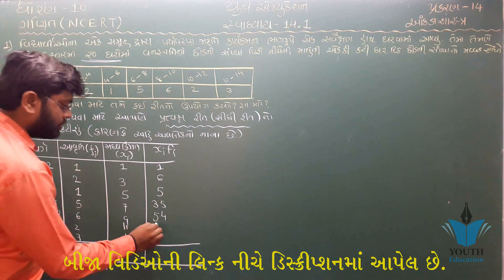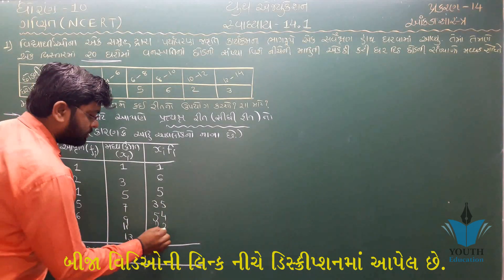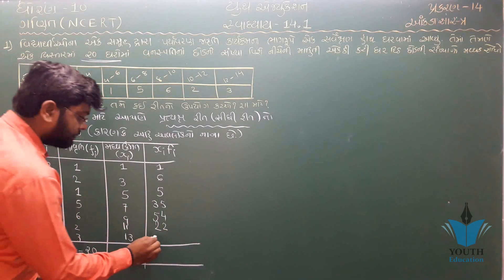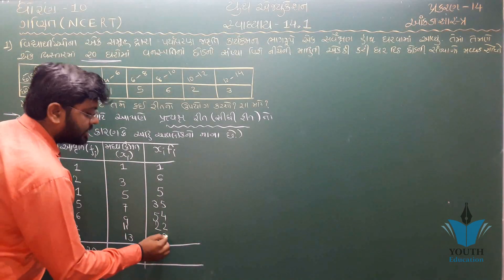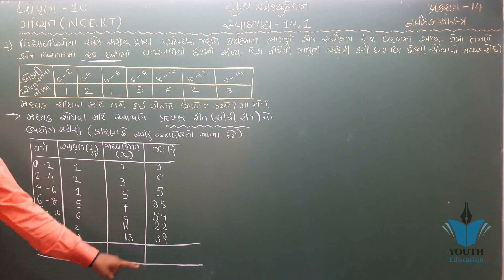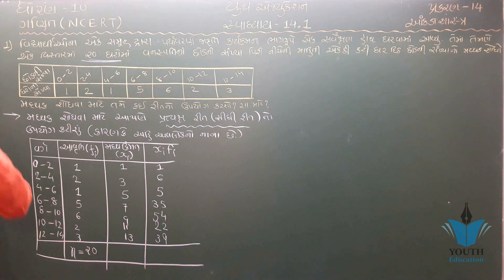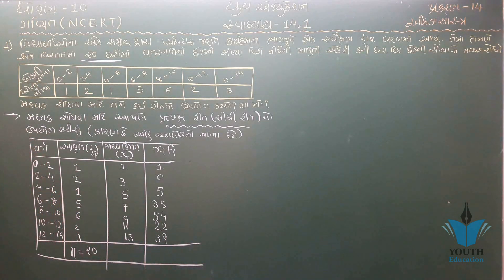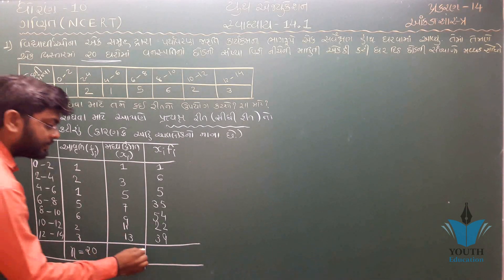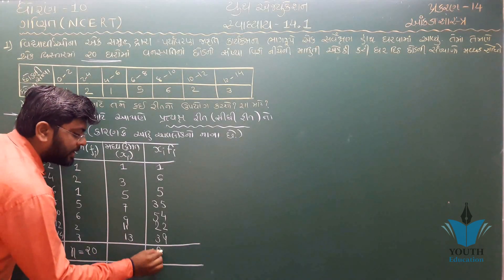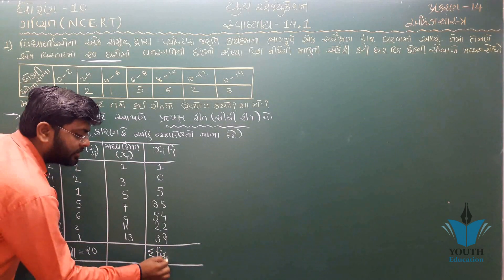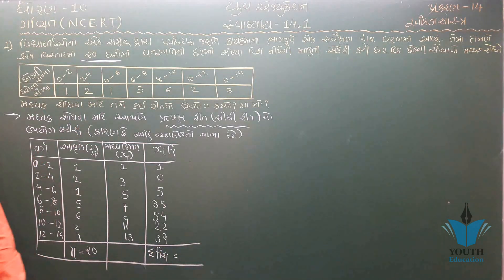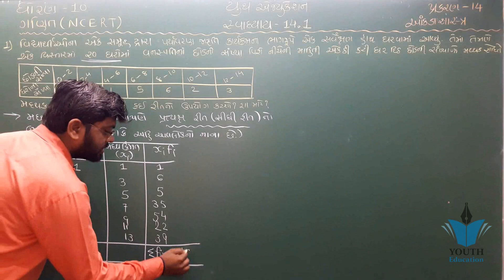સરવાળો: 12, 22, 39, 40... ∑f = 40. કુલ આવૃત્તિ N = 40.